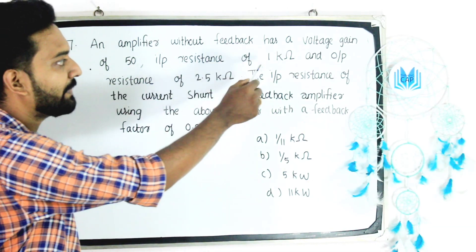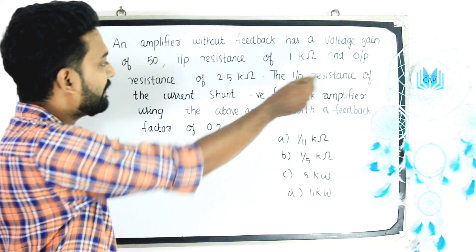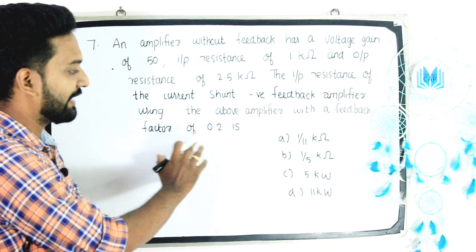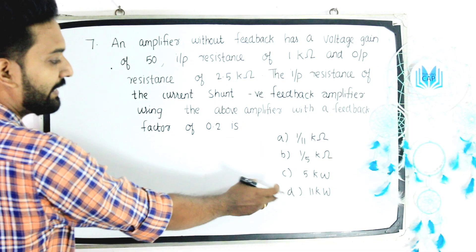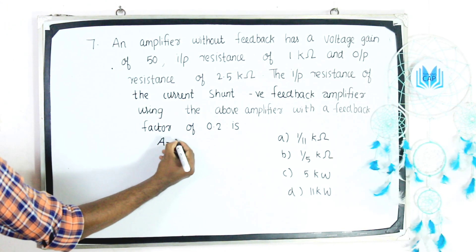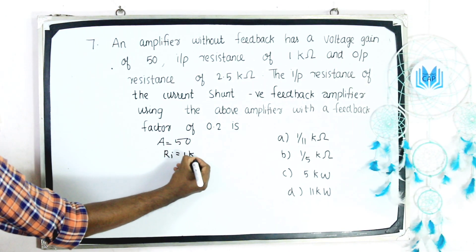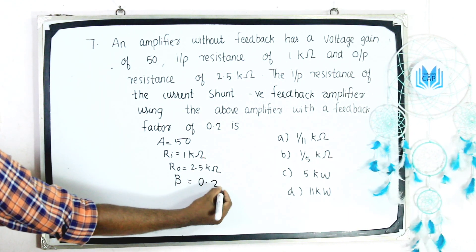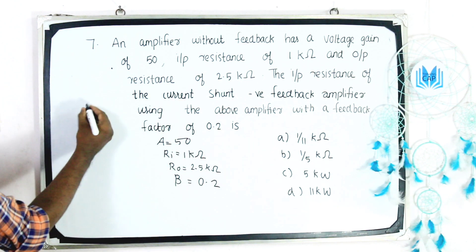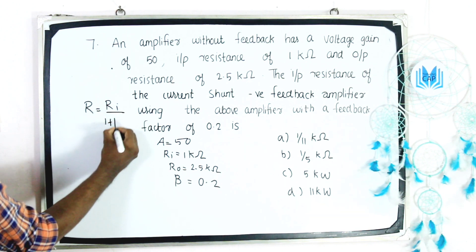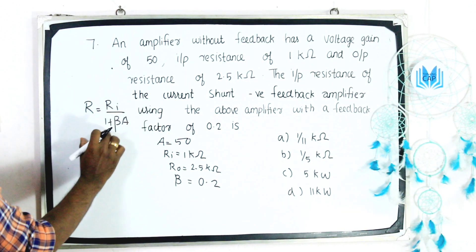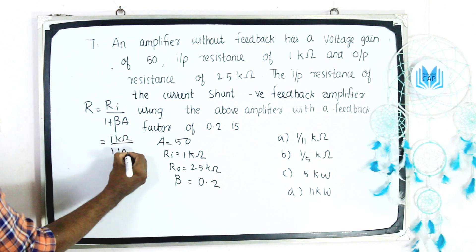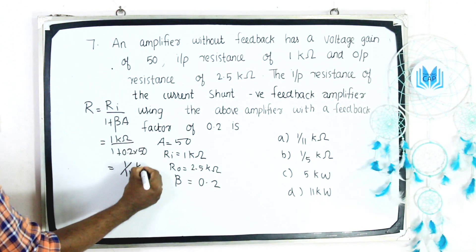Question 6: An amplifier without feedback has a voltage gain of 50, input resistance of 1k ohm, and output resistance of 2.5k ohm. The input resistance of the current shunt negative feedback amplifier with feedback factor beta equal to 0.2 is? Input resistance with feedback for current shunt: R equals RI divided by 1 plus beta into A, which equals 1k ohm divided by 1 plus 0.2 into 50, giving 1/11 k ohm. The answer is option A.